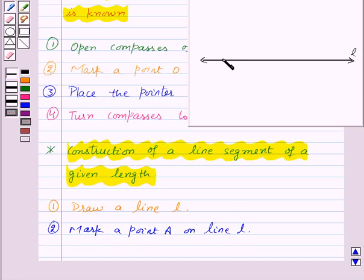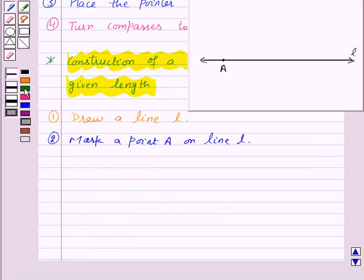So here we have a point A on line L. As the third step, open your compasses of given length.